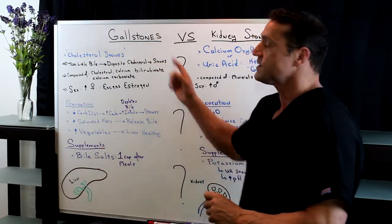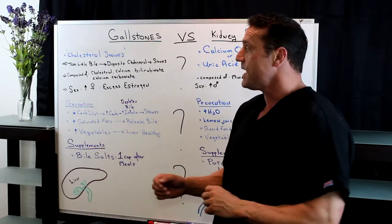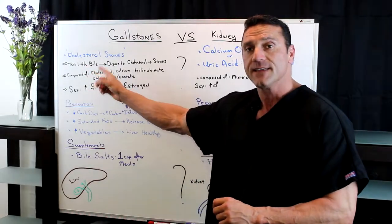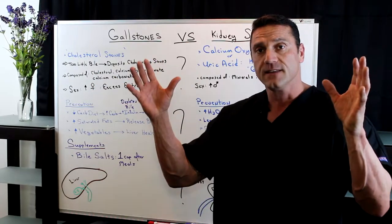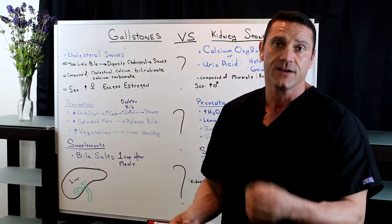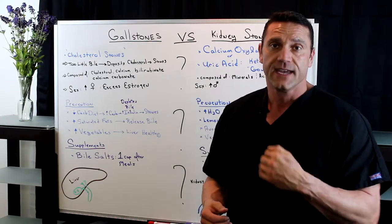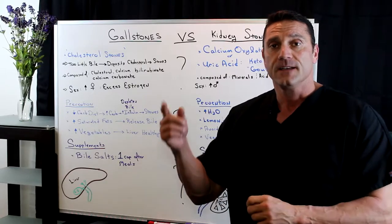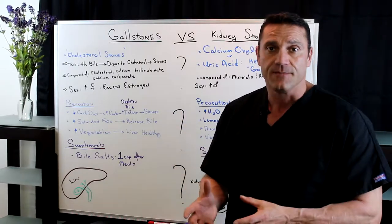With gallstones, they are actually cholesterol stones. They're made by having too little bile in the gallbladder. Bile is made in the liver, stored and concentrated in the gallbladder. The function of bile is that when we take in fats and they get broken down and absorbed in the small intestines, bile is utilized to help break those down.